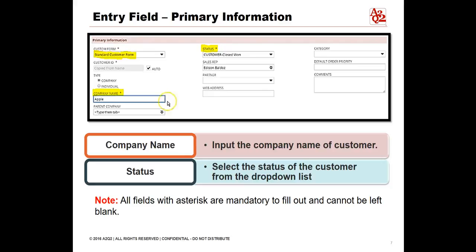The Customer ID field will automatically fill with information you enter on this record. You can clear the Auto check box to override this ID. On the Type options, it may either be set to Company if a company name is entered, or to Individual if the first and last name of the company owner is entered. This selection determines which fields and subtabs are used on this record. If this customer is a company, enter the name of the customer in the Company Name field. If this customer is an individual, enter the name of the customer in the name fields.